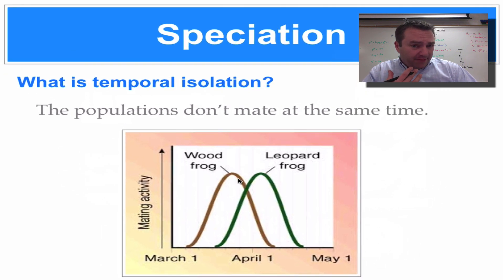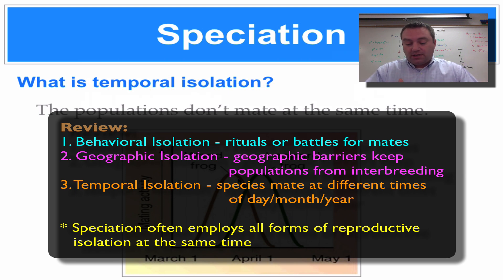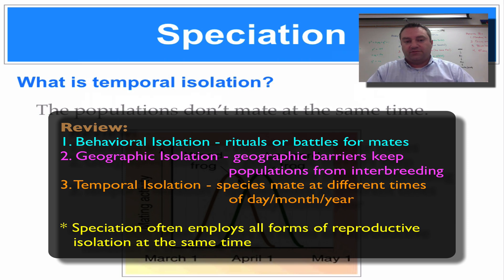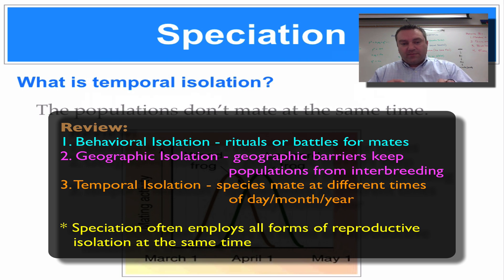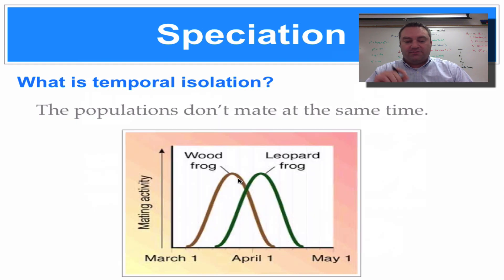To summarize: behavioral isolation involves different mating behaviors and strategies that separate different populations. Geographical isolation involves some kind of barrier — a river, mountain, or desert — that keeps two populations from mating, causing them to diverge into different species. Temporal isolation means species A mates at one time of the year, species B mates at another time, and they never mix their genes because they're mating at different times.